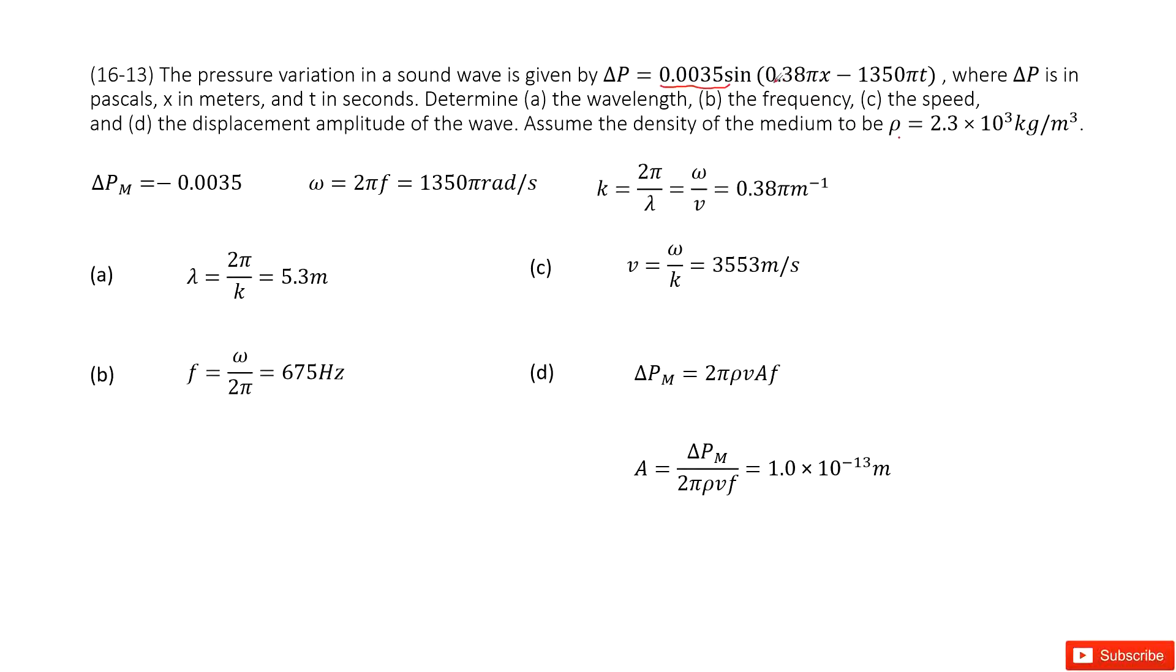This part is called wave number. Wave number is k, k equals 2 pi divided by lambda or omega divided by v. And this term is called omega, angular velocity, 2 pi f. So these are all the given quantities.